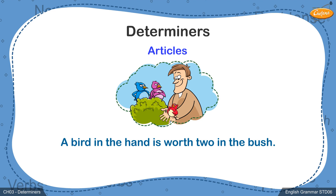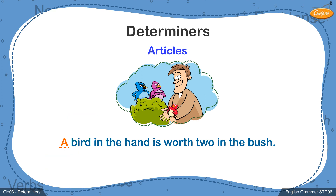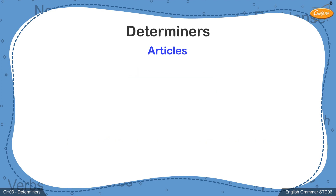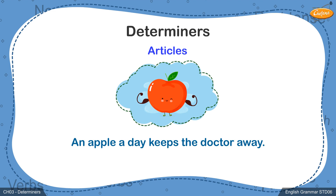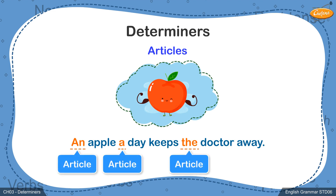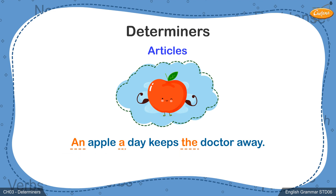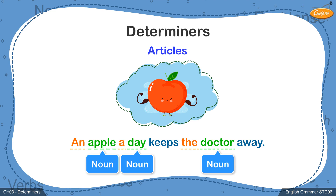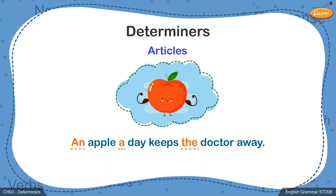A bird in the hand is worth two in the bush. In the first example, the article 'A' has been used just before the noun 'bird' to indicate one bird or a single bird. Therefore, the noun 'bird' now means something specific and therefore the article 'A' becomes a determiner in this sentence. An apple a day keeps the doctor away. You will notice that in this example, all the three articles — a, an and the — have been used just before the nouns 'apple', 'day' and 'doctor' respectively, to add more meaning to them. All the three articles here are determiners.